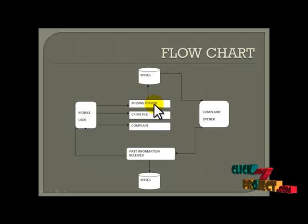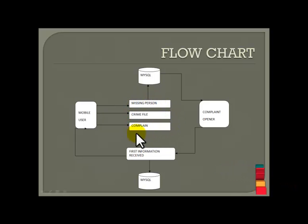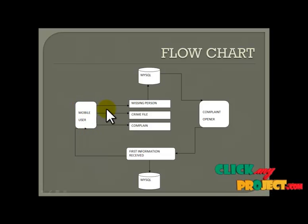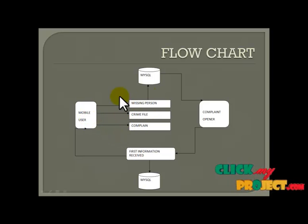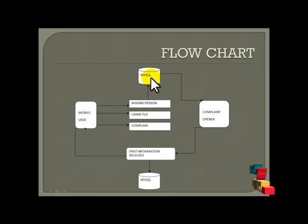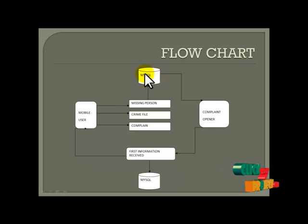This is the flowchart. The mobile user can handle missing persons, crime files, and complaints — these are the files for public users. We are using Android mobile only. The Android mobile application provides access to missing persons, crime files, and complaint registration. All the information entered by the mobile user is applicable to the MySQL database.